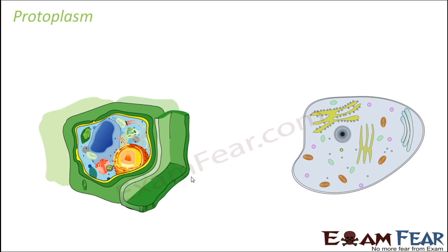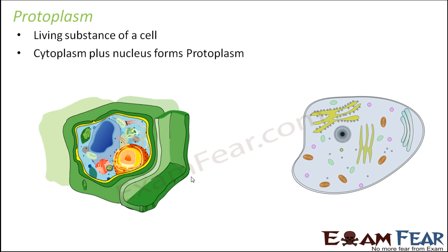When talking about cytoplasm, it is important to clarify protoplasm, because many people get confused and think cytoplasm and protoplasm mean the same thing — but that is not the case. Protoplasm is a broader term; it is the living substance of a cell. Cytoplasm is just the fluid inside the cell, but protoplasm is cytoplasm plus nucleus. So everything present inside the cell is protoplasm.